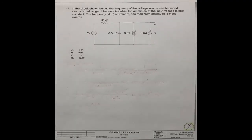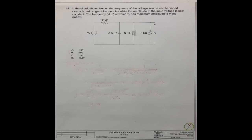Question No. 44. In the circuit shown below, the frequency of the voltage source can be varied over a broad range of frequencies. While the amplitude of the input voltage is kept constant, the frequency in kHz at which v₀ has maximum amplitude is most nearly what number?